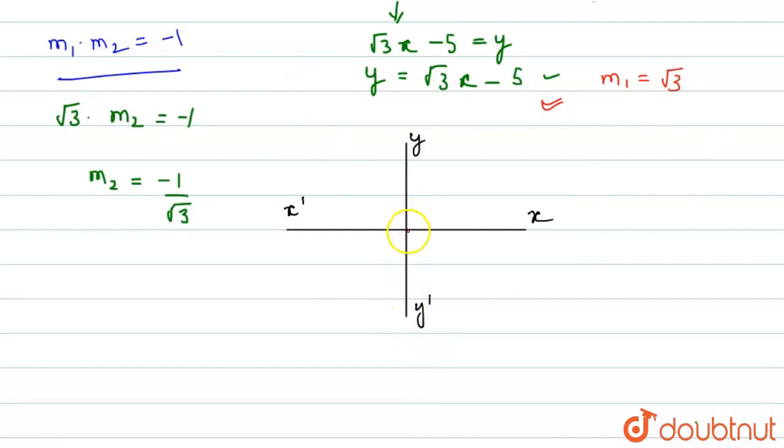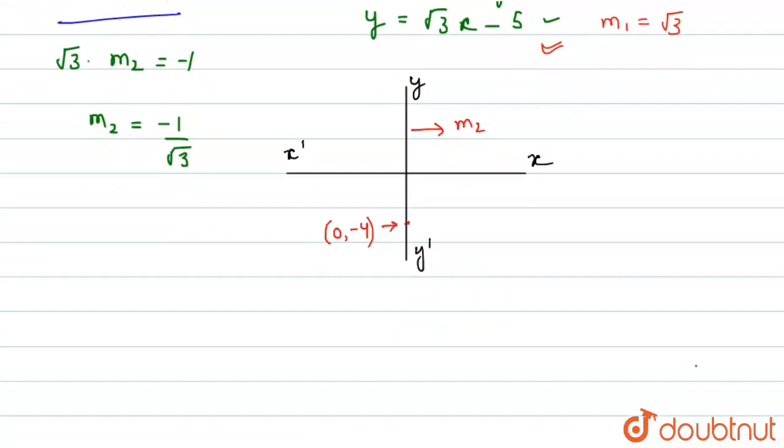So, let this be 4 units. So, this point lies on the y-axis. So, this point will be (0, -4), since x is 0 and this is -4. So now, we have the slope of this line m₂ and we have one point. So, we can find out the equation of this line.